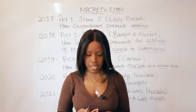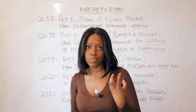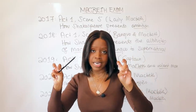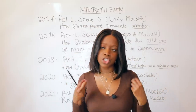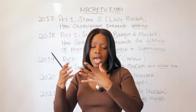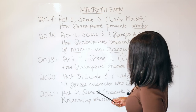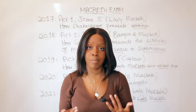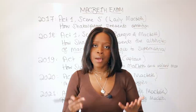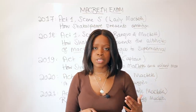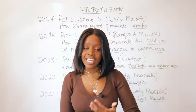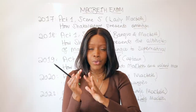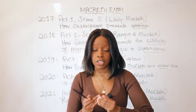In the 2017 exam, you received an extract taken from Act 1 Scene 5. This is where Lady Macbeth has just read the letter from Macbeth telling her about the witches' prophecies. She's wondering whether he's 'too full of the milk of human kindness' to kill King Duncan and become king himself. She's really ambitious — she wants to influence her husband when he comes back from war to kill King Duncan.